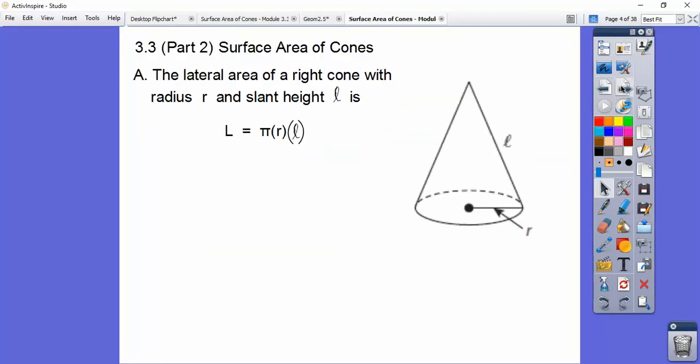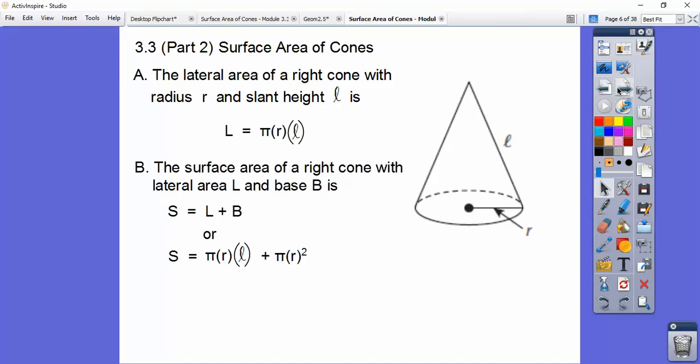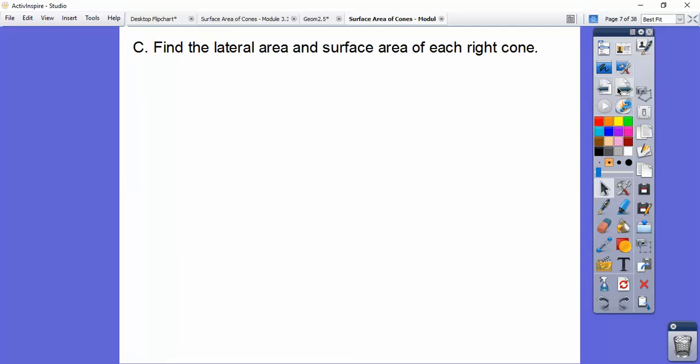So surface area of cones. The lateral area of a right cone is just like the pyramid which is one half PL. But the P is circumference and circumference is 2πR. So one half of 2 is just πR. So instead of 2πR it's πR. Can you see this is half the circumference? So it's just πRL. And then the whole surface area is the base which is πR² plus the lateral area πRL. Alright, let's try some you guys.